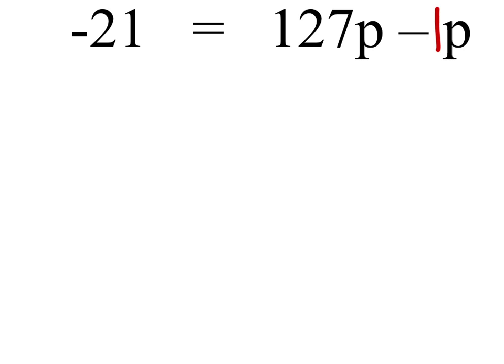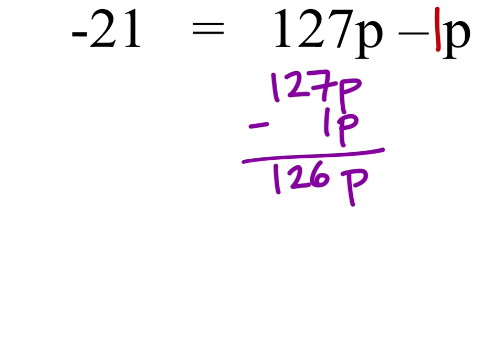So when we take this 127P and subtract 1P, we can just see that value of 1 there, which allows us now to subtract those. We'll still have a certain number of P's, but looks like we have 126P's left.